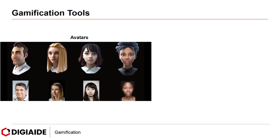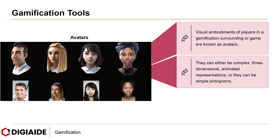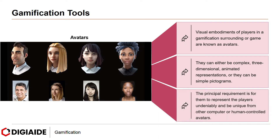Next, avatars. Visual embodiments of players in a gamification surrounding or game are known as avatars. They can either be complex, three-dimensional, animated representations, or they can be simple pictograms. The principal requirement is for them to represent the players undeniably and be unique from other computer or human-controlled avatars.